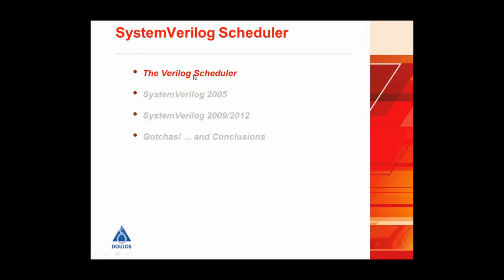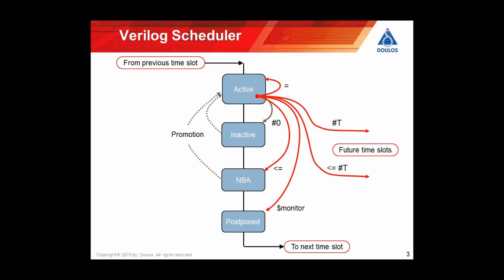The Verilog scheduler itself — this is a diagram of the traditional Verilog scheduler. It's got an active region at the top, which is where you make a blocking assignment with no delay. It's then got an inactive region, where if you make an assignment with a hash zero (pound zero delay), it gets put into inactive. That can then cause things to happen which get moved back to active. Then you've got the non-blocking assignment region. The non-blocking assignment region is what you typically use for clocked logic, because anything you're reading at a particular clock edge hasn't changed if you make non-blocking assignments — it's going to change in the future in the non-blocking region. On the right, there's the option of delaying things into future time slots by putting delays in.